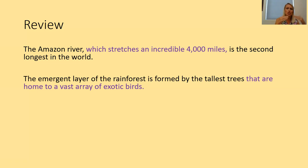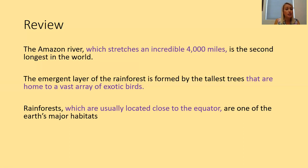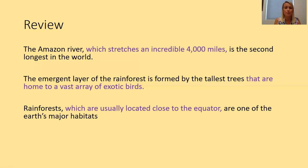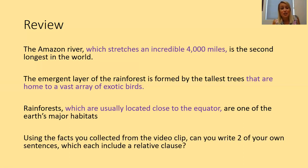Hopefully you're feeling good so far and have managed to add in some relative clauses — not necessarily the same as mine, but in the right places. Let's look at the last main clause: 'Rainforests are one of the earth's major habitats.' Adding a relative clause as an embedded clause: 'Rainforests, which are usually located close to the equator, are one of the earth's major habitats.' I've used the relative pronoun 'which' to add extra information about the rainforest — modifying that noun.